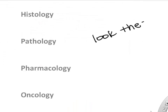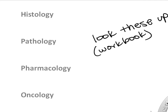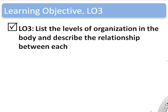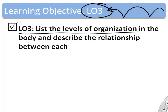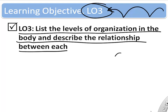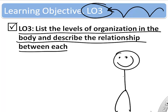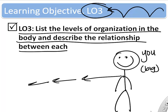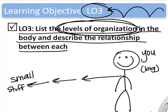Look up the rest of these terms and we can check your answers when you come to class — write your answers in your workbook. The next learning objective is to look at the levels of organization in the body and describe the relationship between each. I wanted you to think about what you're made of, because we can get pretty small. Let's look at the levels of organization.